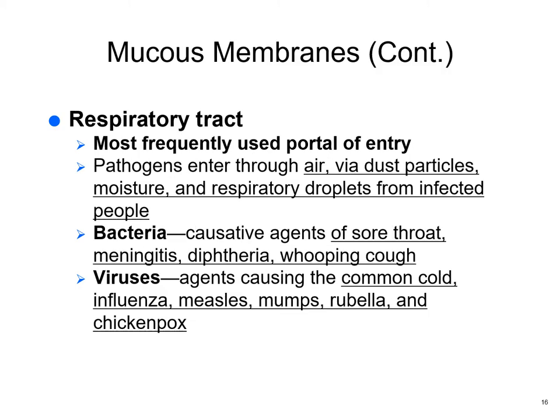The respiratory tract is the most common portal of entry. Infection can come through the air via dust particles, moisture, and respiratory droplets from infected people. Bacteria can cause anything from sore throats to meningitis, diphtheria, and whooping cough (pertussis). Viruses include the common cold, influenza, measles, mumps, chicken pox, rubella — and COVID.